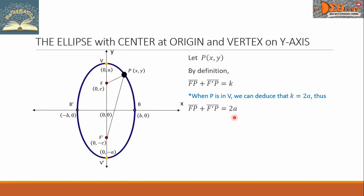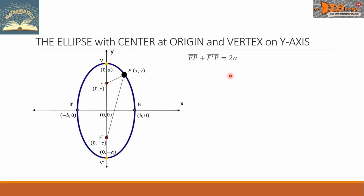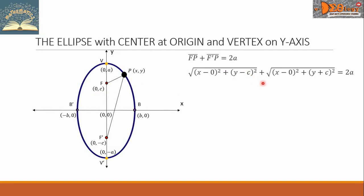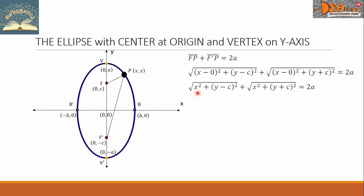So here we go. We can now use the distance formula between two points. The distance fp is the square root of (x - 0)² + (y - c)², plus the distance f'p is the square root of (x - 0)² + (y + c)², and all of this is equal to 2a. We simplify x - 0 into x, so we have x² in both radicands.